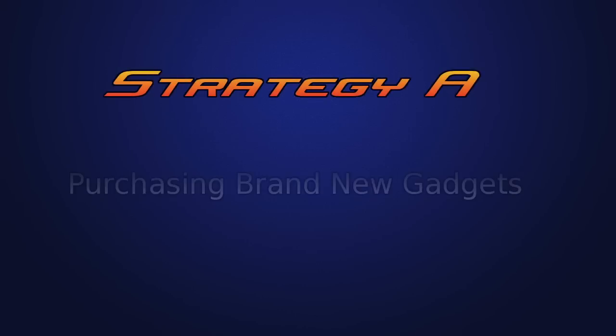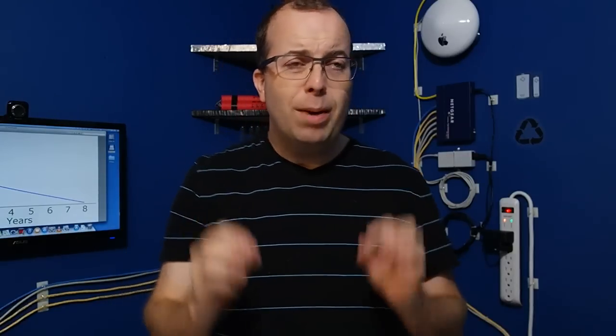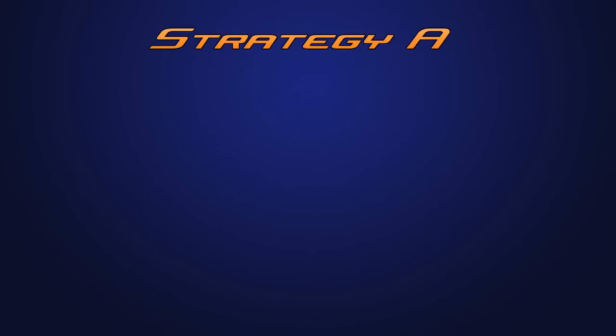Strategy A: Buying Brand New Gadgets. The first part of the strategy is pretty simple. Find the product you want to buy, find the best price for it, that might be online, that might be in a store, and then just buy it. Now, the key is, once you buy the gadget, you need to follow these steps.